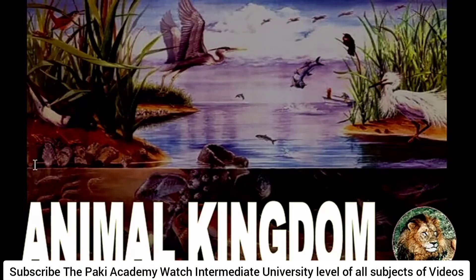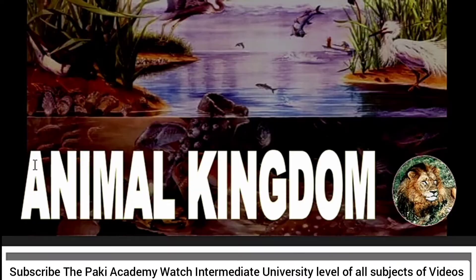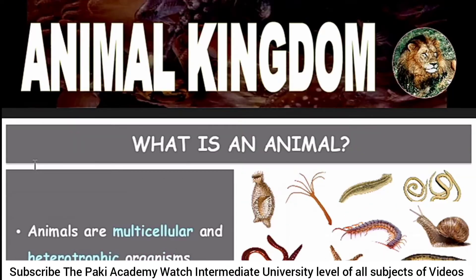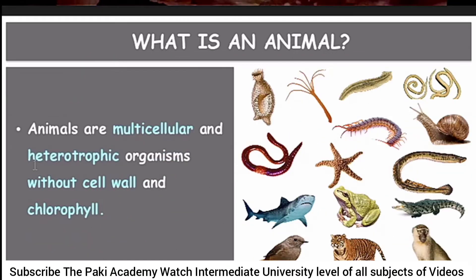Assalamu alaikum. I am here with the next lecture on Animal Kingdom. To understand animal kingdom, we have to understand what is an animal. Animals are multicellular, heterotrophic organisms that do not prepare food for themselves. They obtain food from other sources like plants, animals, and matter. In major animals, there is no cell wall and no chlorophyll — only plants have cell walls.